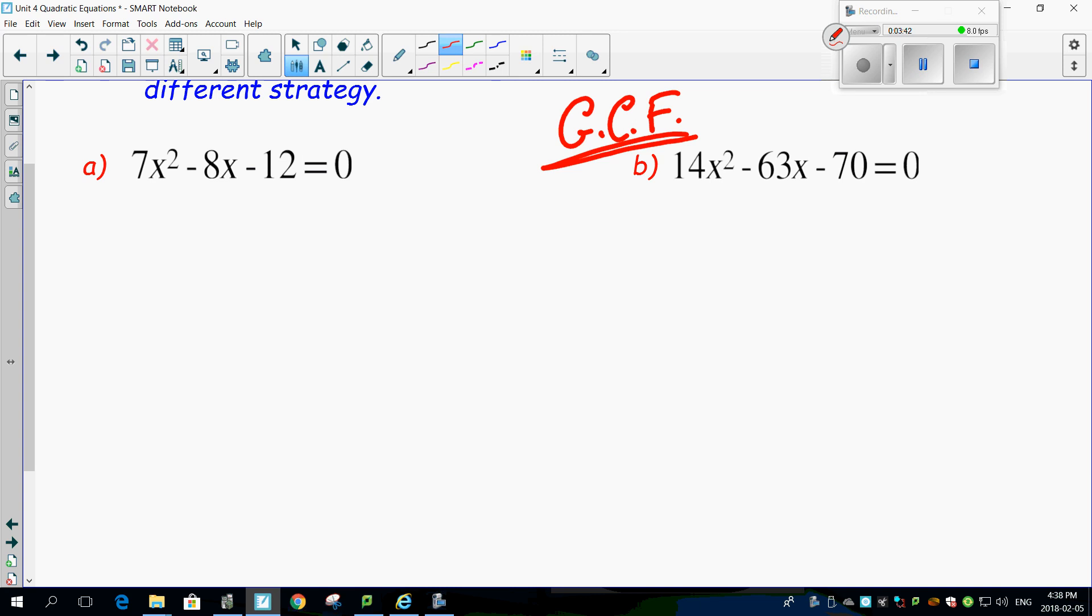And I saw something here that kind of resonated in my brain. I looked at the 14, and I looked at the 70, and I went, I wonder if it's divisible by 7 or by 14 or something like that. And sure, in fact, it is, because 63 is also divisible by 7. So let's get rid of the 7 right now. Factor it out. 2x squared, minus 9x minus 10, equals 0.